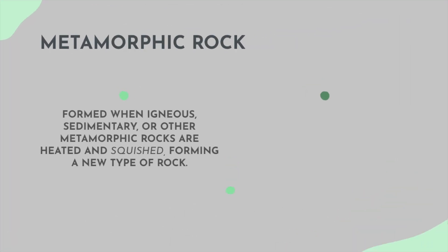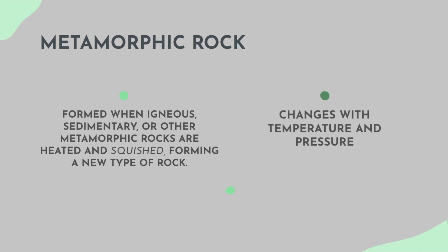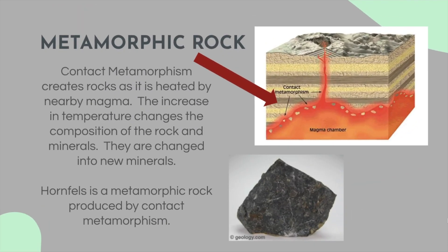Metamorphic rock is formed when igneous, sedimentary, or other metamorphic rocks are heated and squished — forming a new type of rock. Our third type of rock, metamorphic rock. These changes all occur because of temperature and pressure, and this takes place deep inside the earth. Contact metamorphism creates rocks as rock is heated by nearby magma. The increase in temperature changes the composition of the rock and minerals — they are changed into new minerals, new rocks. Hornfels is a metamorphic rock produced by contact metamorphism.